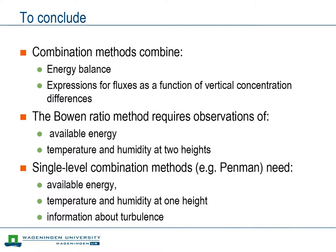To summarize, the combination methods combine the energy balance and expressions for the fluxes based on vertical concentration differences. To determine fluxes from the Bowen ratio method, you require observations of available energy and temperature and humidity at two heights. Alternatively, there are single-level combination methods. For that, on top of the available energy, you need temperature and humidity at one height.